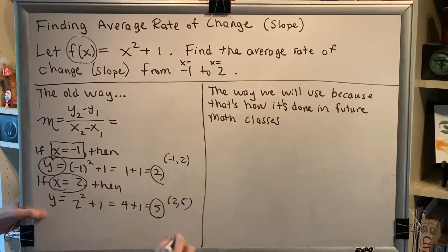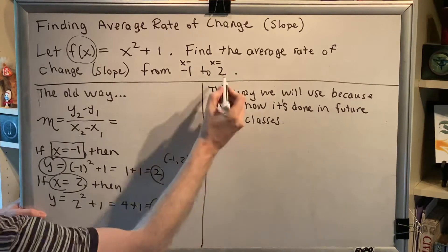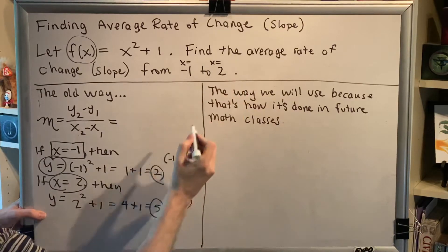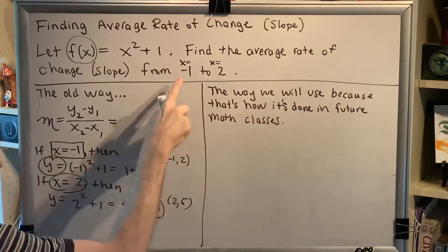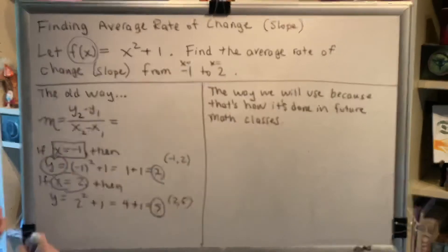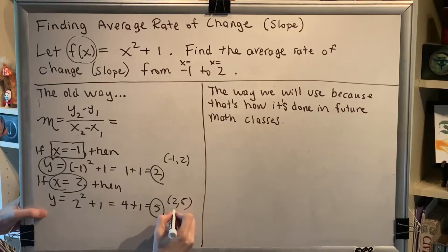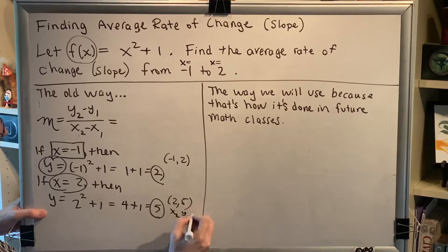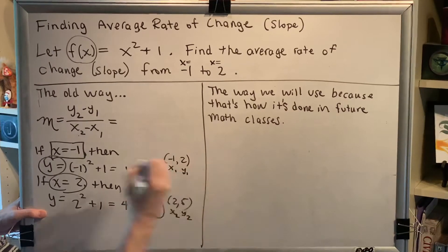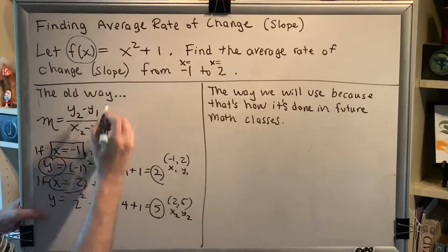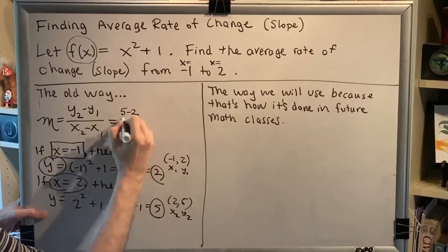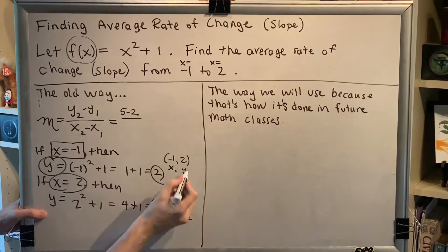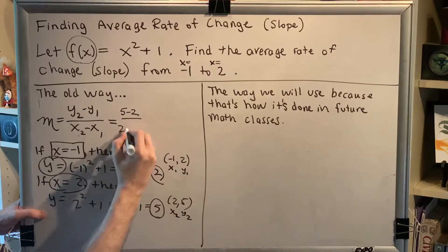So y2 minus y1. So we're going to say that the larger x value is always going to be the second one and the smaller x value was always going to be the first one. So that means that this right here would be my x2y2 and this would be my x1y1. So plugging in, I'm going to have 5 minus 2, y2 minus y1, over 2 minus negative 1.